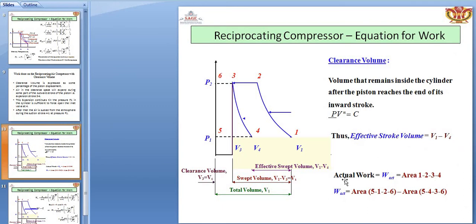The actual work done is the area 1-2-3-4. The actual area equals area 5-1-2-6 minus area 5-4-3-6. As you subtract the clearance area, the actual work done is reduced accordingly. The total volume consists of the swept volume and the clearance volume. The clearance volume is V3 = Vc, the swept volume is V1 minus V3, and the total volume is V1, which is the sum of swept volume and clearance volume.